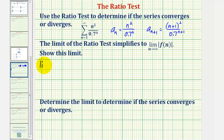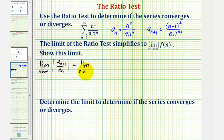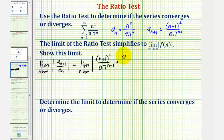So now we'll find the limit as n approaches infinity of the absolute value of a sub n plus one divided by a sub n. Instead of dividing by a sub n, we multiply by the reciprocal of a sub n. So we'd have the limit as n approaches infinity of the absolute value of a sub n plus one, which is the quantity n plus one squared divided by 0.7 raised to the power of n plus one, times the reciprocal of a sub n, which would be 0.7 raised to the power of n divided by n squared.